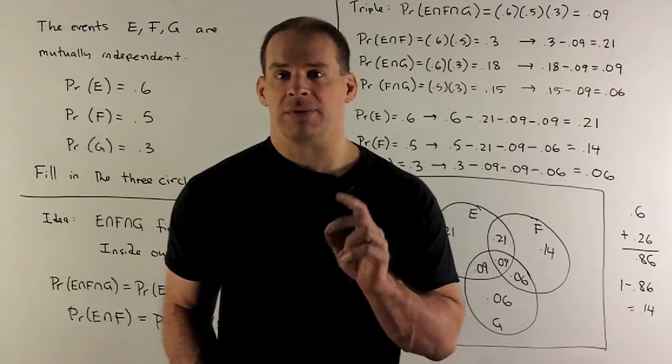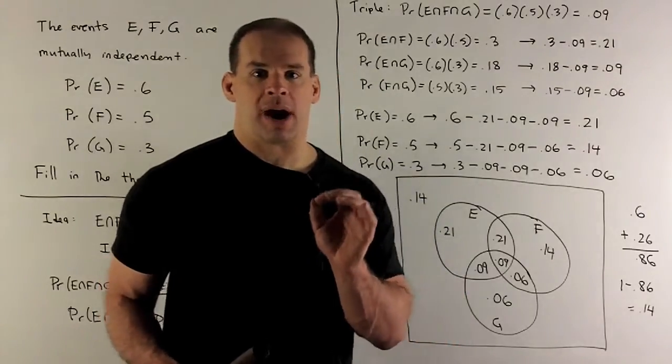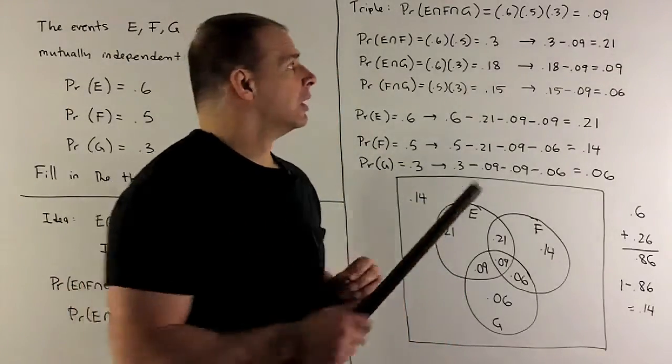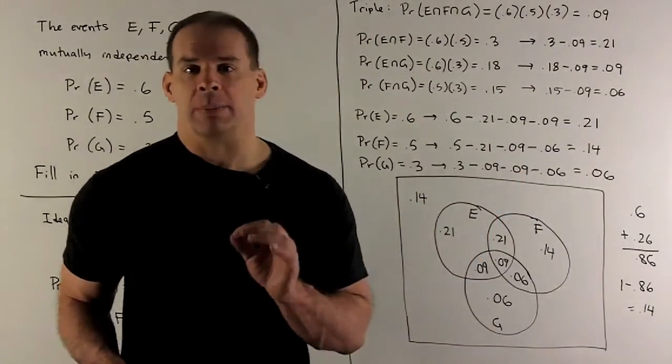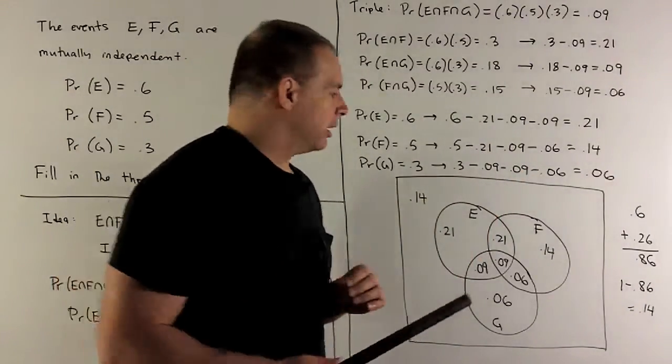So intersection of three events, we just take the product of the probabilities we're given. I'll have 0.6 times 0.5 times 0.3, I get 0.09. So we fill in the middle.